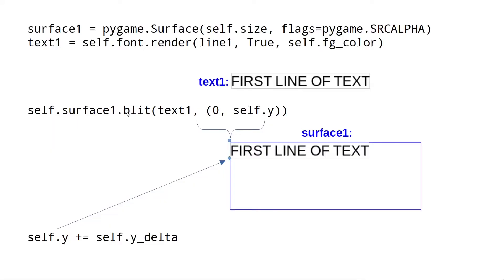This shows the essential technique we're going to use and the code that does it. First, you need a surface that you're going to scroll text up onto, so we create a surface with a height large enough to show a certain number of lines and a width that allows the longest line. Then we create a surface that holds the first line of text — this is normally how you draw text — so you just render the first line of text into a surface called text1.